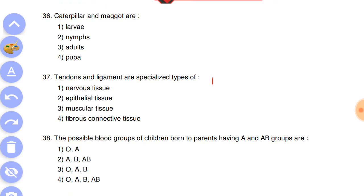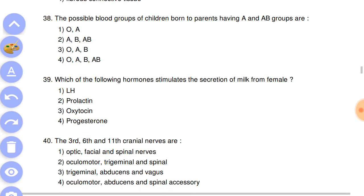Next question: caterpillar and maggot are answer is the first, larva. Next question: tendons and ligaments are specialized type of answer is the fourth, fibrous connective tissues.